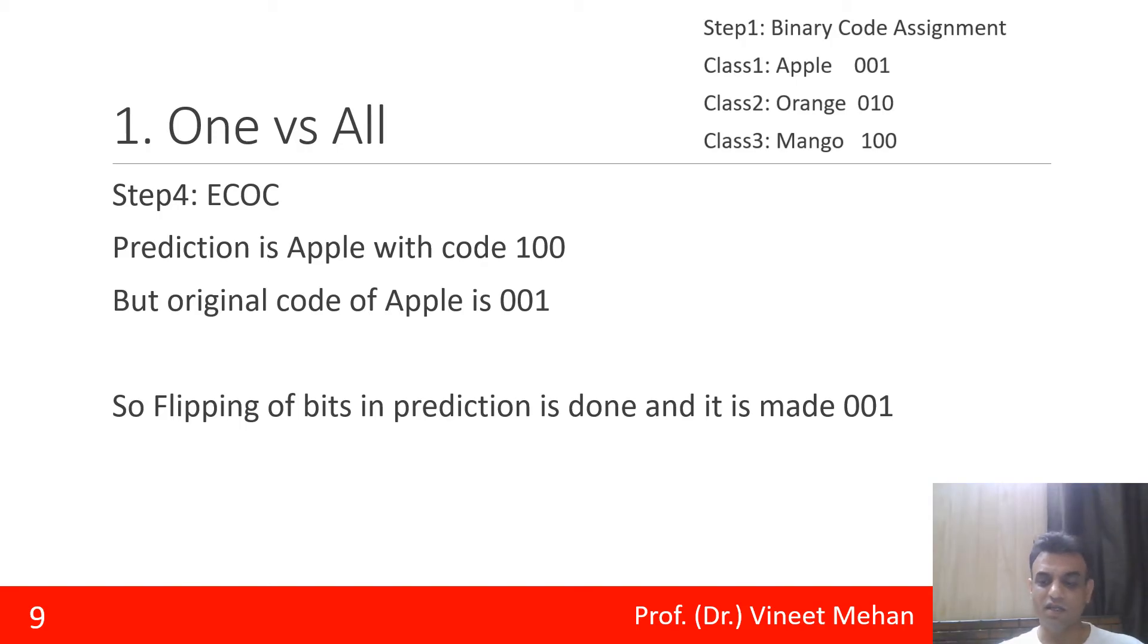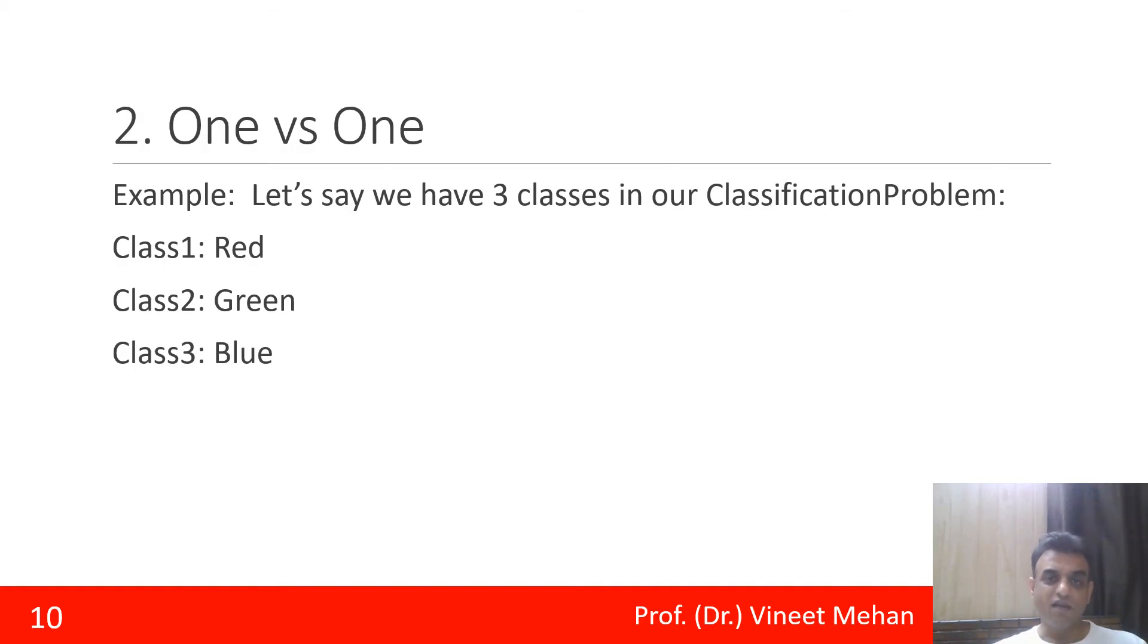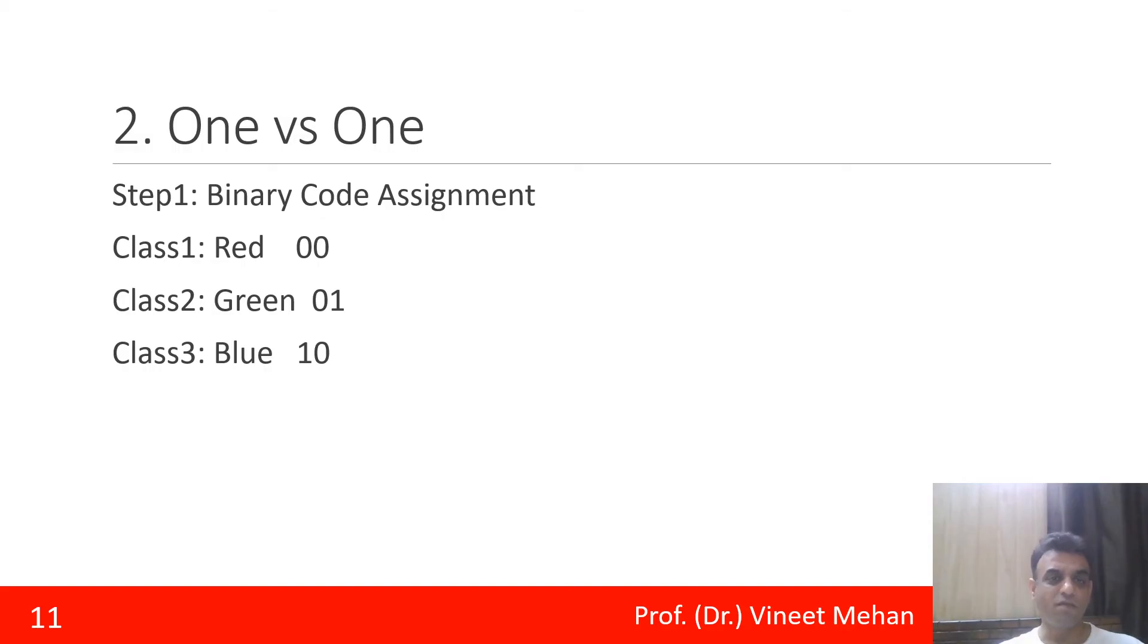Similarly, we have another technique that is one versus one. Here again we have taken three classes but now we have changed the name of the classes. Here we have taken three classes to be red, green, and blue. Red for class one, green for class two, and blue for class three. Again in step number one, we will be assigning binary codes. Now the binary codes here we have taken are 00 for red, 01 for green, and 10 for blue. We can assign any number of codes here, maybe it is 1 bit, maybe it is 2 bit, maybe it is 3 bits or more bits.